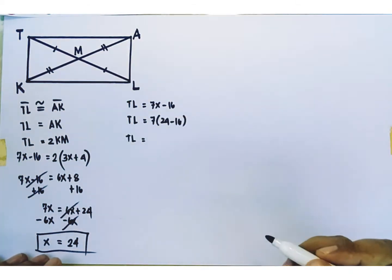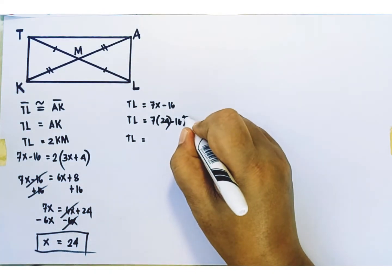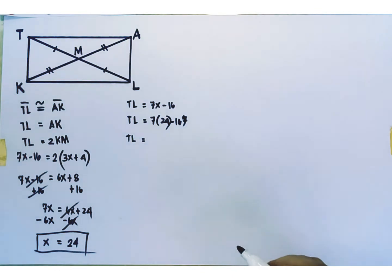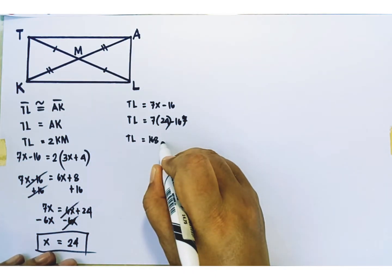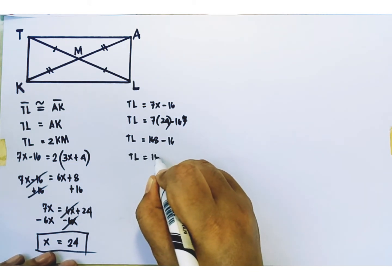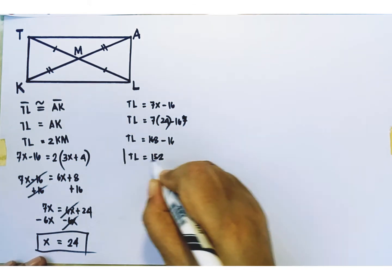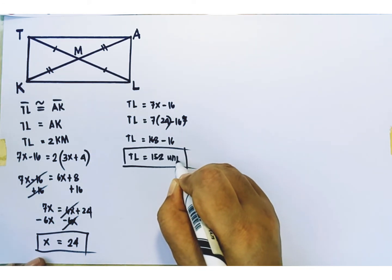Therefore, TL is equal to 7 times 24 minus 16. 7 times 24 is equal to 168. And 168 minus 16 is equal to 152. This is the length of diagonal TL. 152 units.